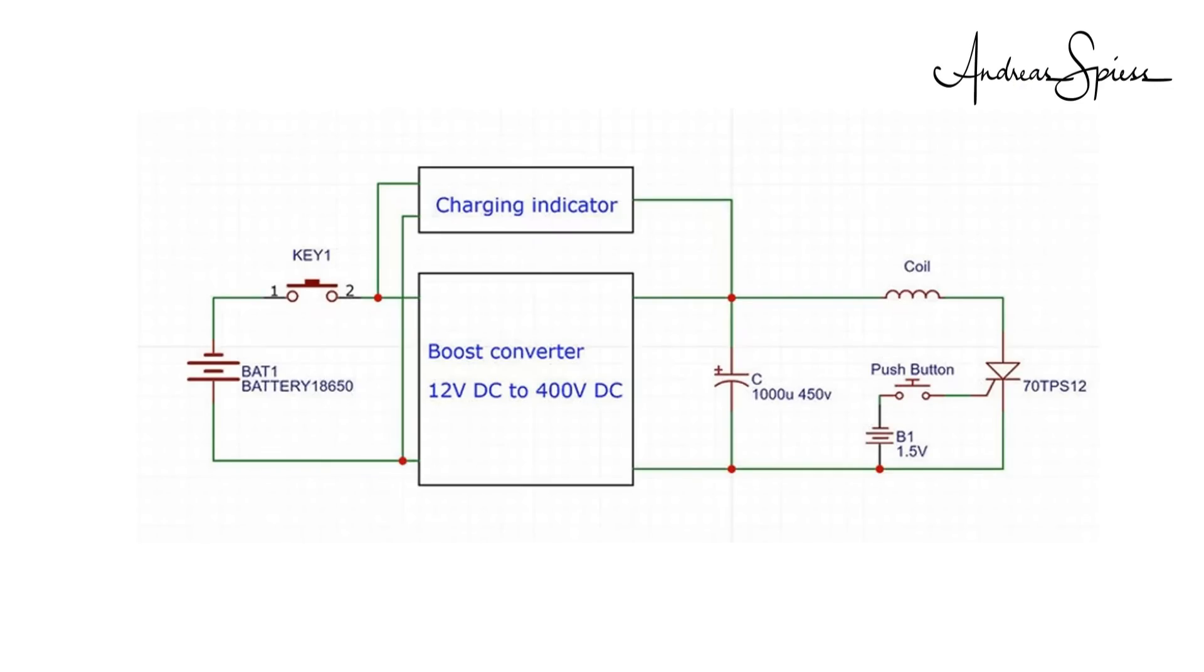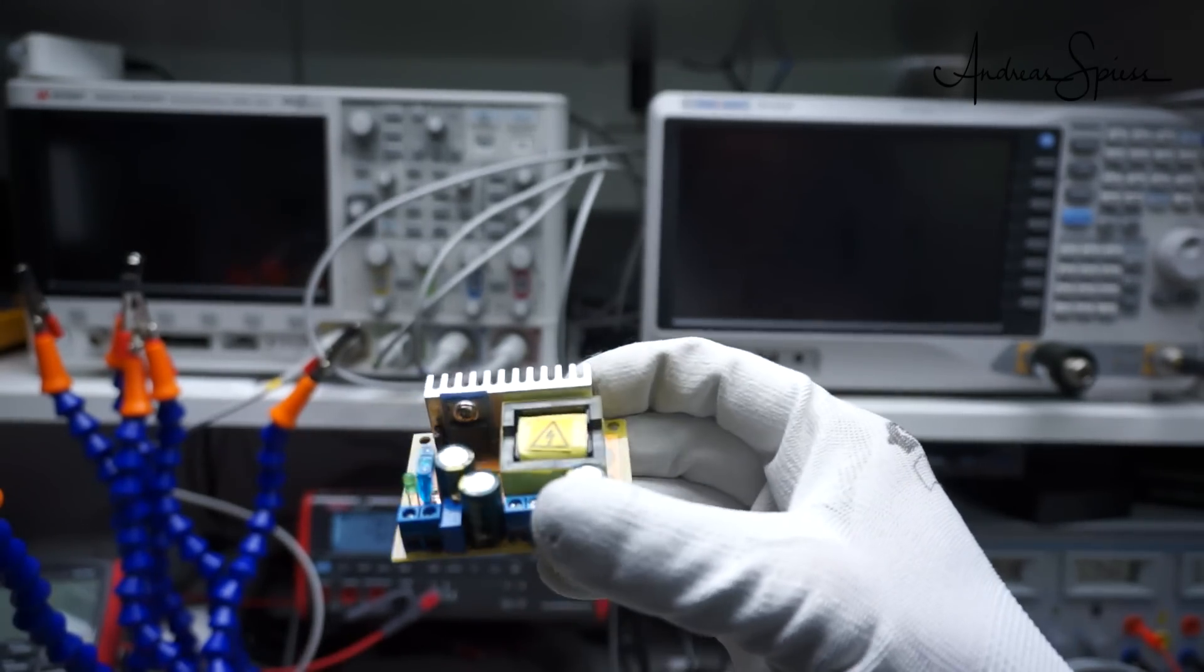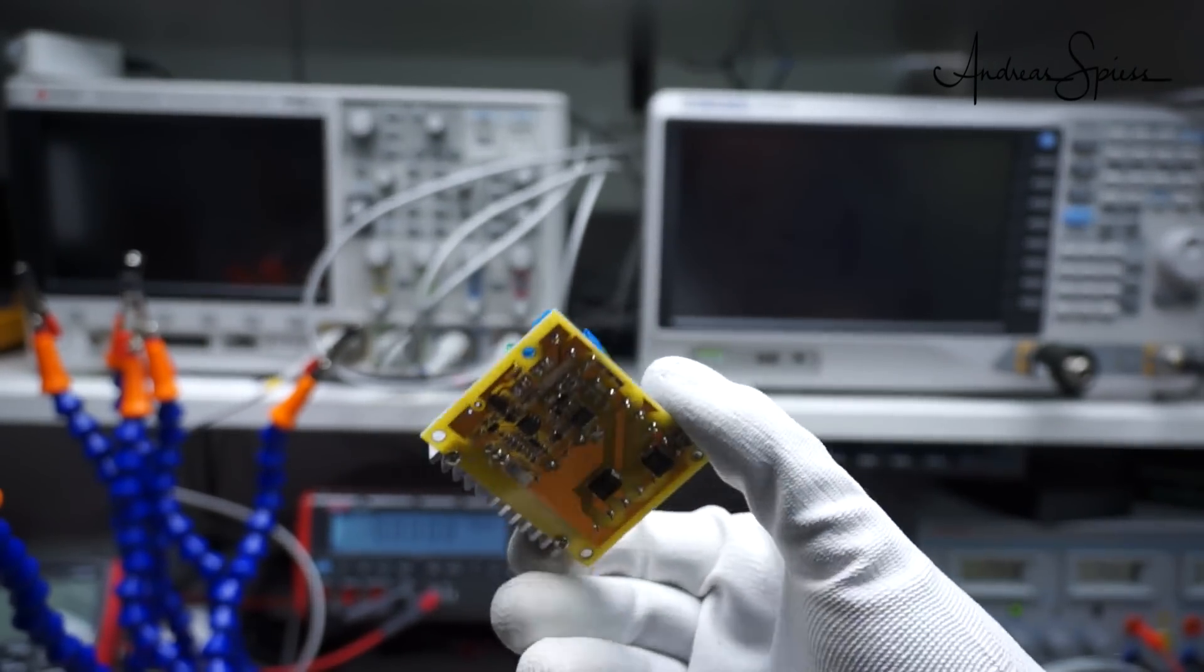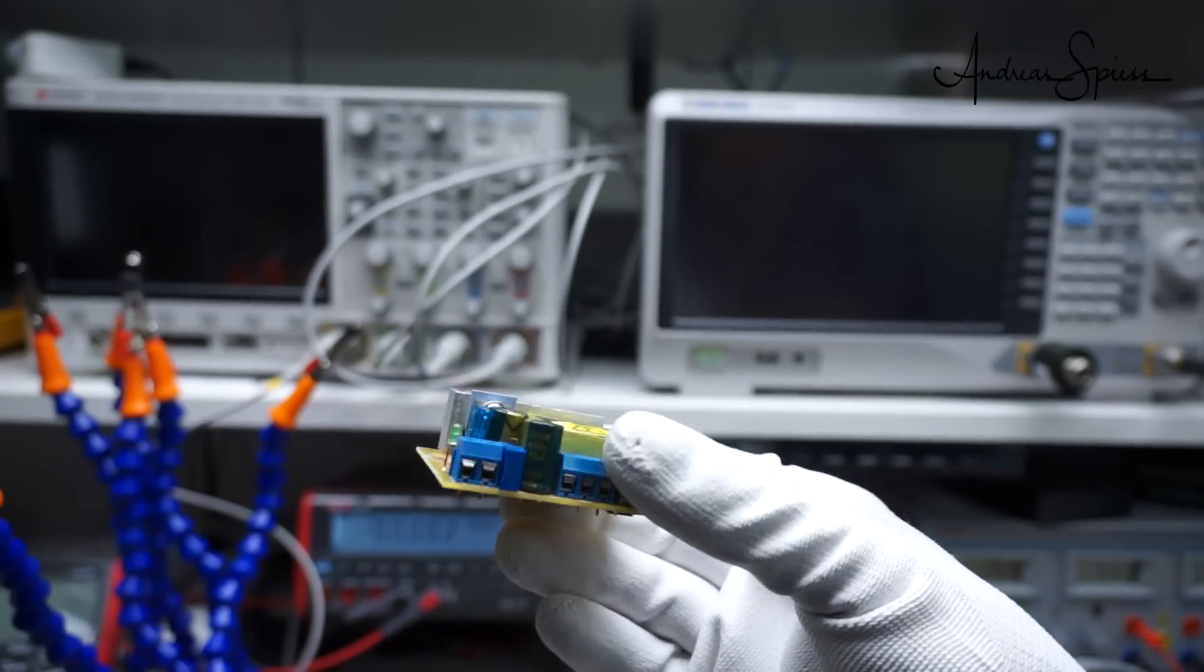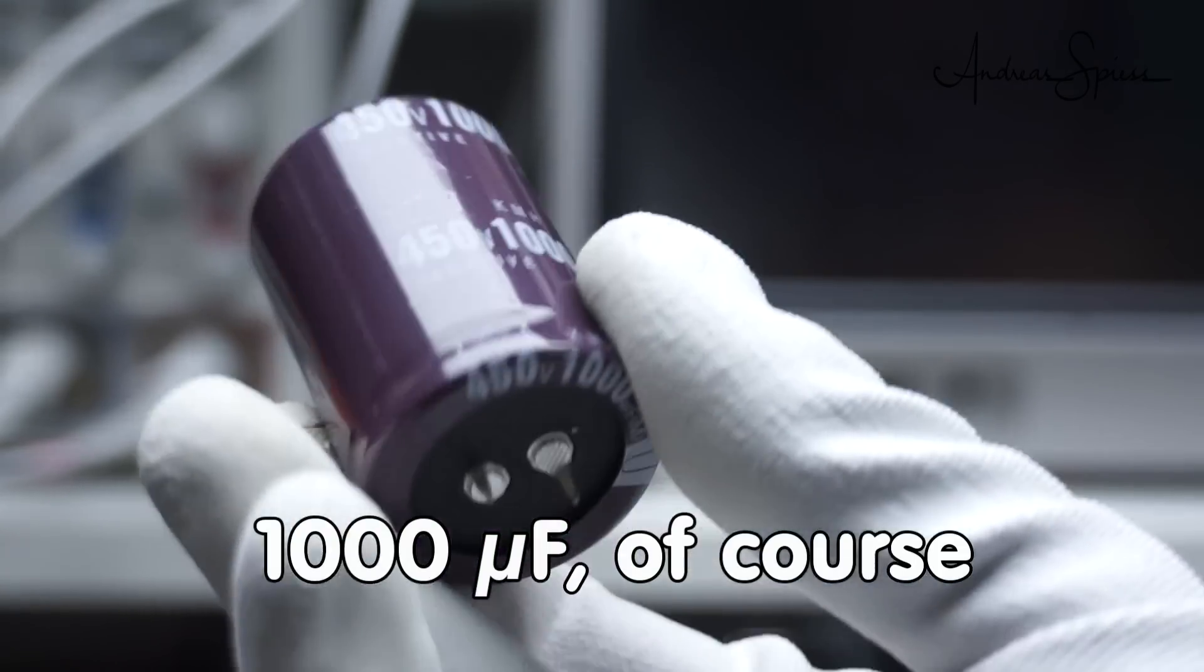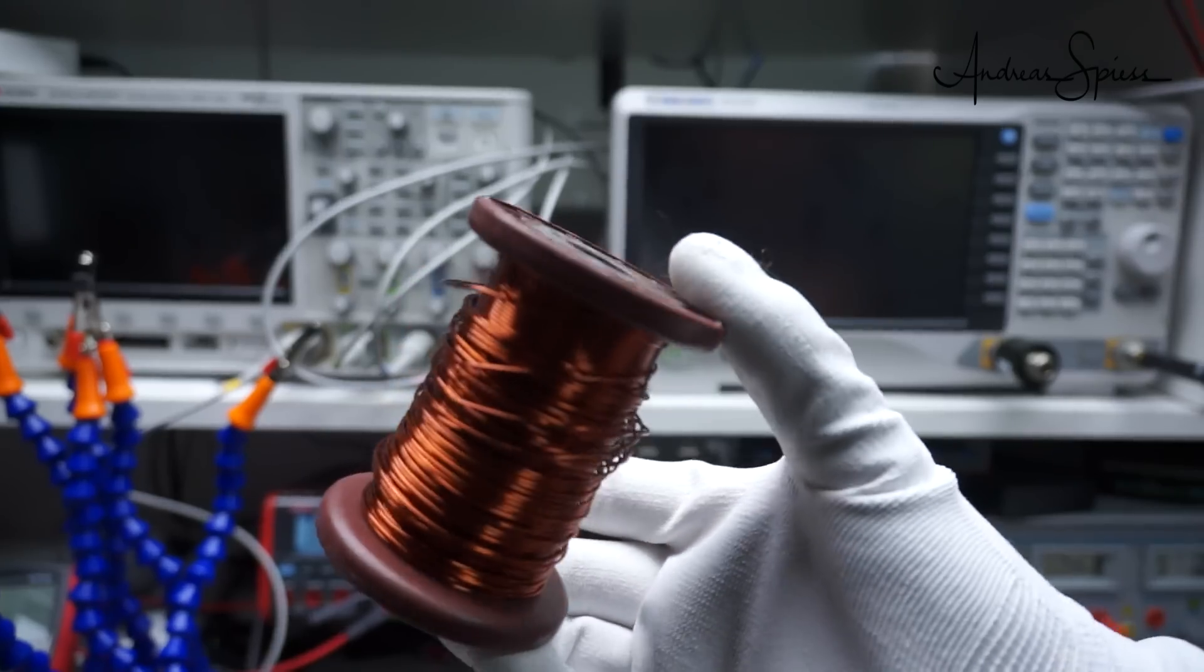I ordered the components as described in the instructable. A DC to DC converter which, according to its datasheet, should be able to output 400 volts, and unfortunately exceeded its specifications. A 100 microfarad capacitor for 450 volts, some copper wire, and a thyristor.